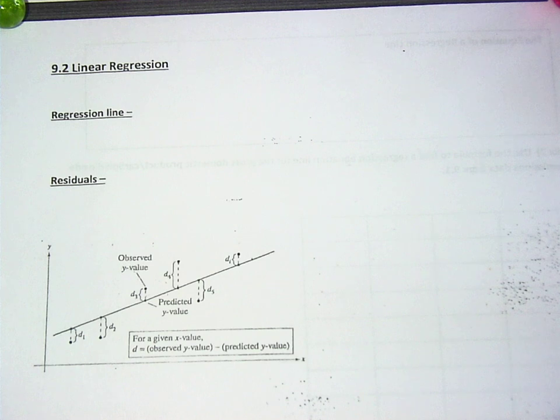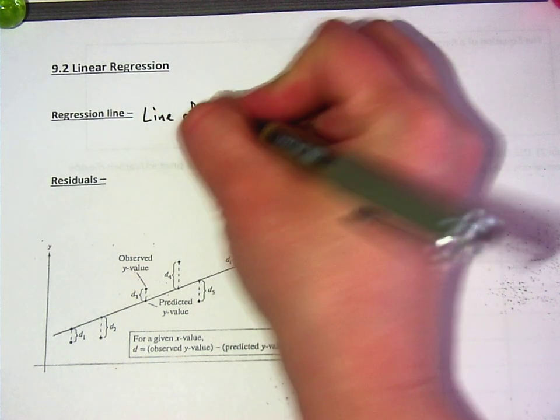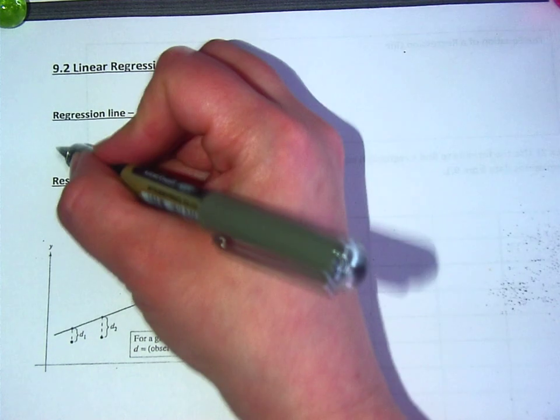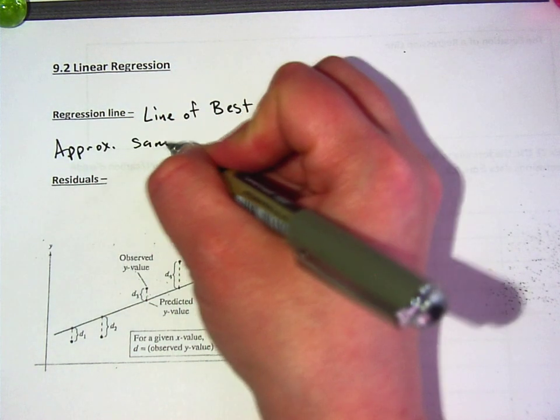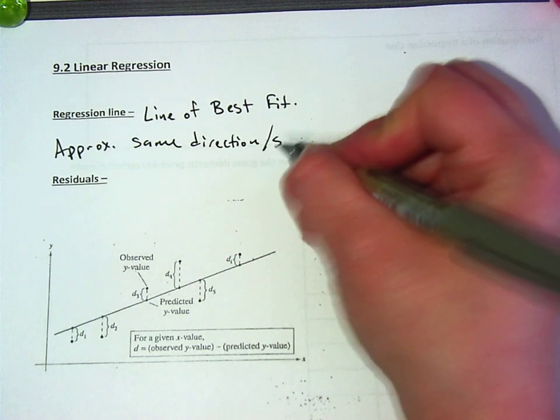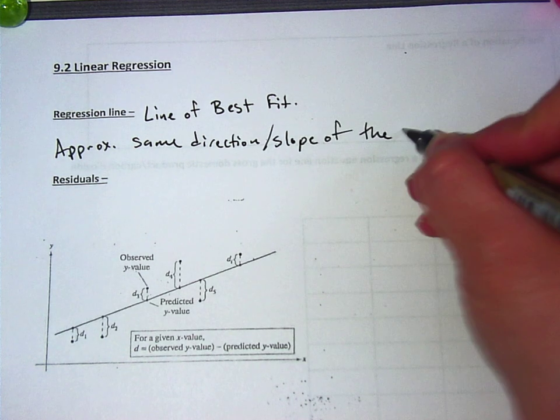So, what is a regression line? Linear regression. We've already done it, right? What is a regression line? Line of best fit. It is a line of best fit. It is approximately the same direction and slope of the scatter plot.